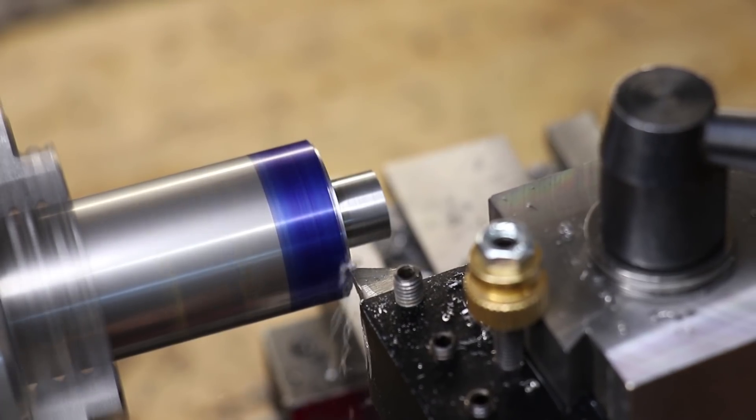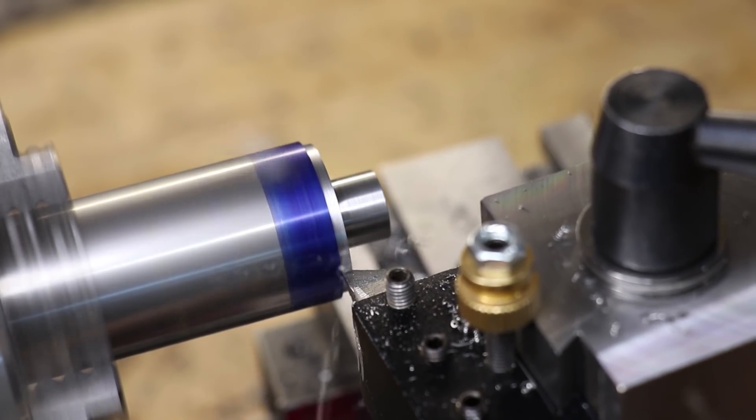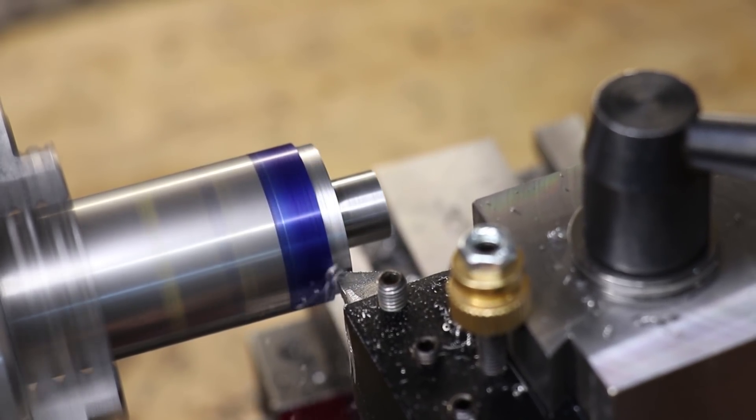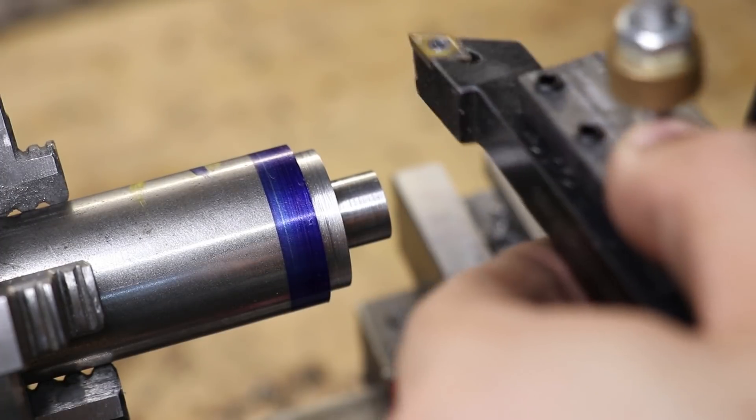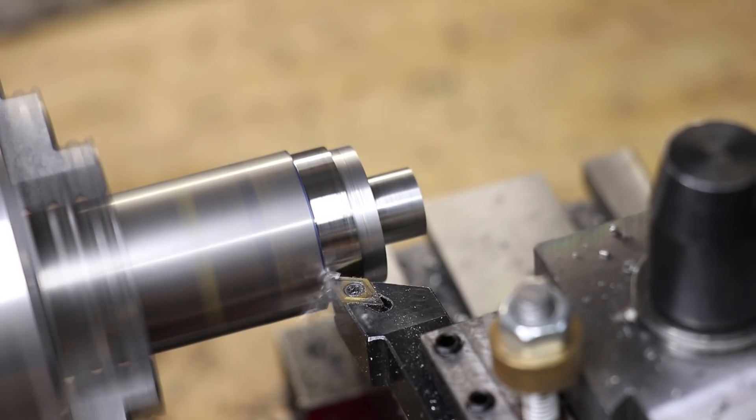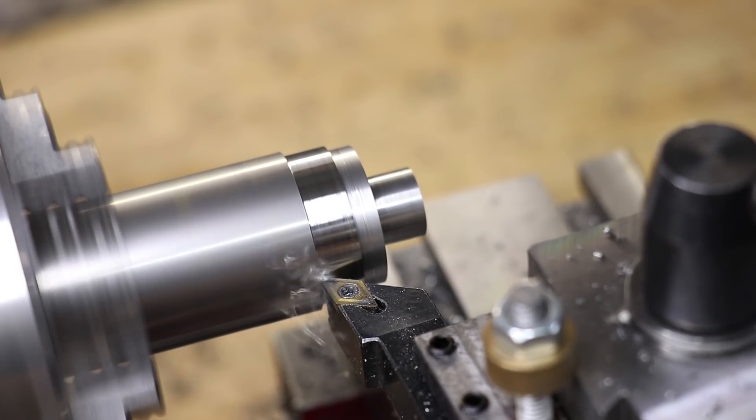Next I'll take the shank down to 20mm in diameter so it fits really nicely in the collet. I tried taking it down with the high-speed steel initially but it just wasn't handling it as well as the carbide did so I swapped back to the carbide.